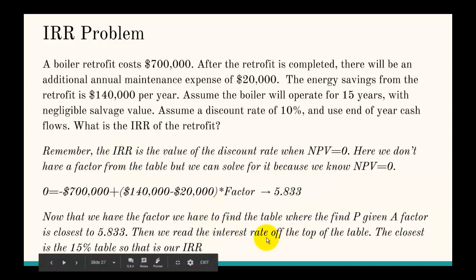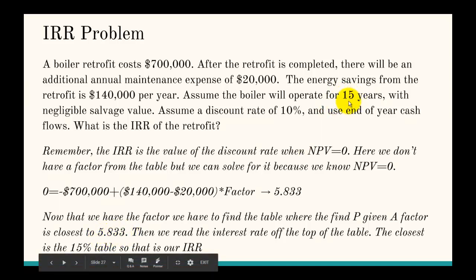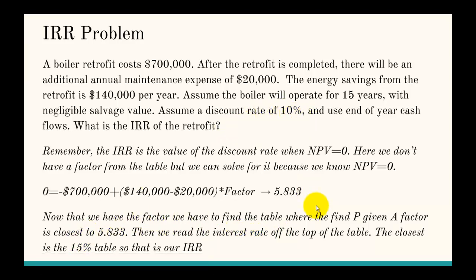Looking through the tables, the closest value to 5.833 for 'Find P Given A' after 15 years is in the 15% table. So 15% is our IRR. Since 15% is greater than the discount rate of 10%, we would go through with this project — the same decision we reached when calculating the net present value.